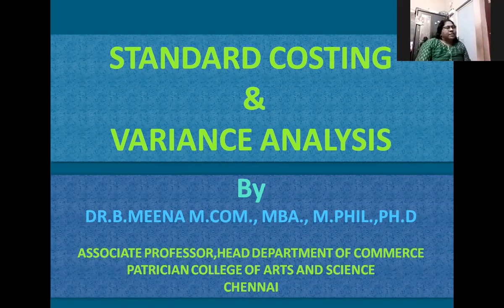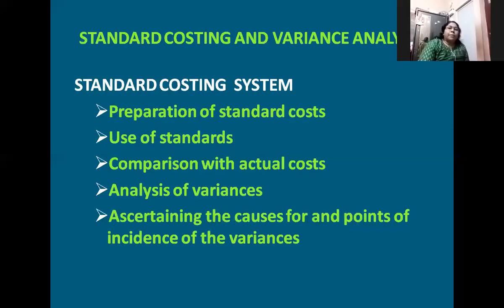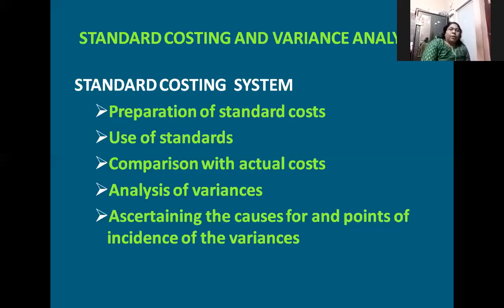What is standard costing? Before that, I'll explain what is a standard. Usually we term standard as a norm, a measure, or a yardstick with which comparison can be made. In this meaning, standard cost is a predetermined cost which is calculated from management standards of efficient operation. It is used as a basis for fixing a price or for cost control through variance analysis.